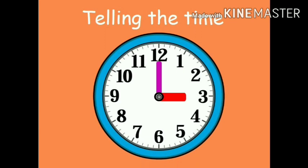The small hand points to the hours, the big hand points to the minutes. When the big hand points to 12, the time is 12 o'clock. For now, the time on the clock is 3 o'clock, because the big hand is the minute hand and it is pointing to 12, and the small hand shows the hour, so it is 3 o'clock.